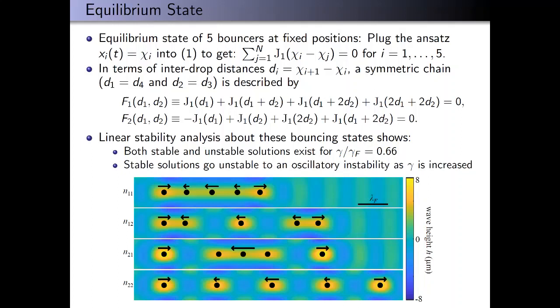This figure shows four of the stable bouncing states at the onset of instability. The dots represent the drops, and the arrows represent the magnitude and direction of the eigenvectors at the onset of instability. This shows what phase they're oscillating in at the onset of this oscillatory instability.